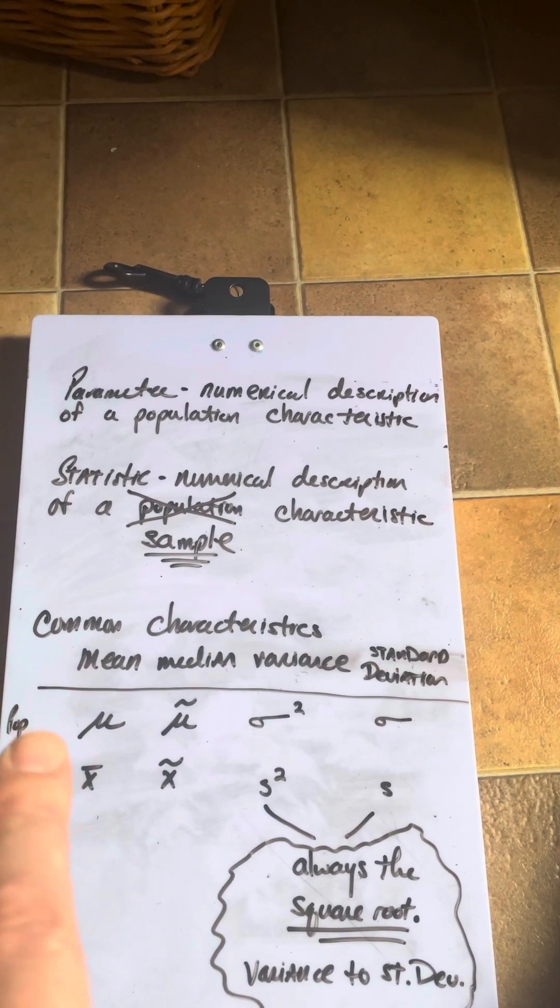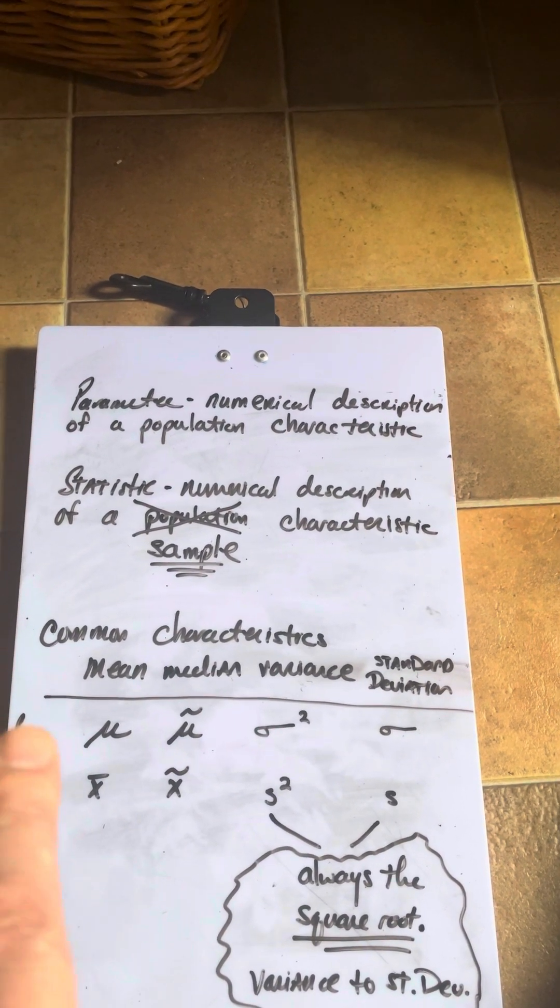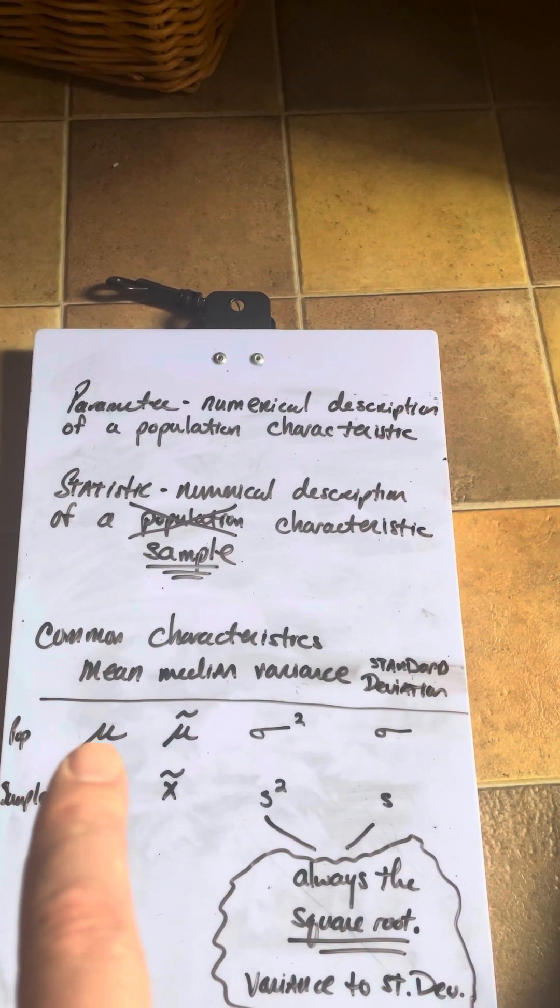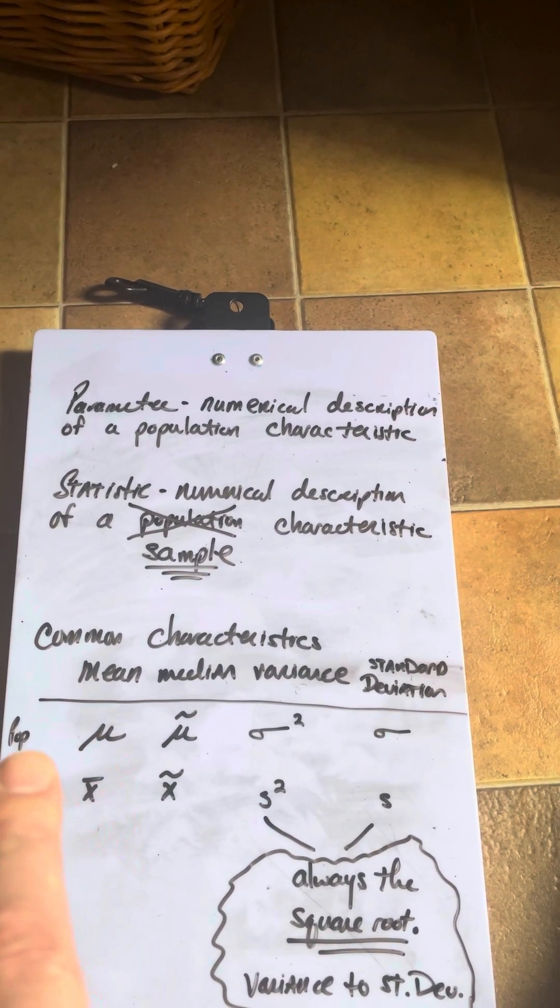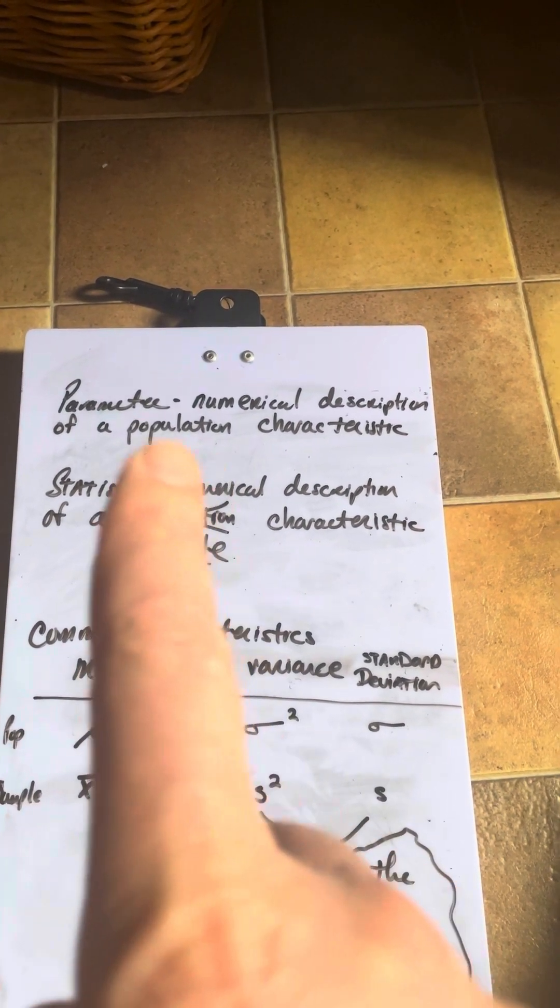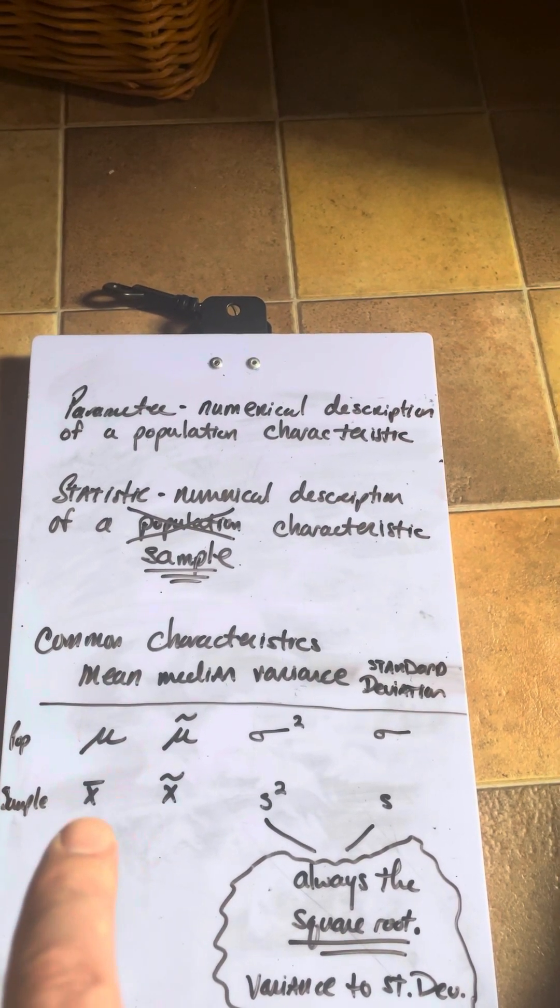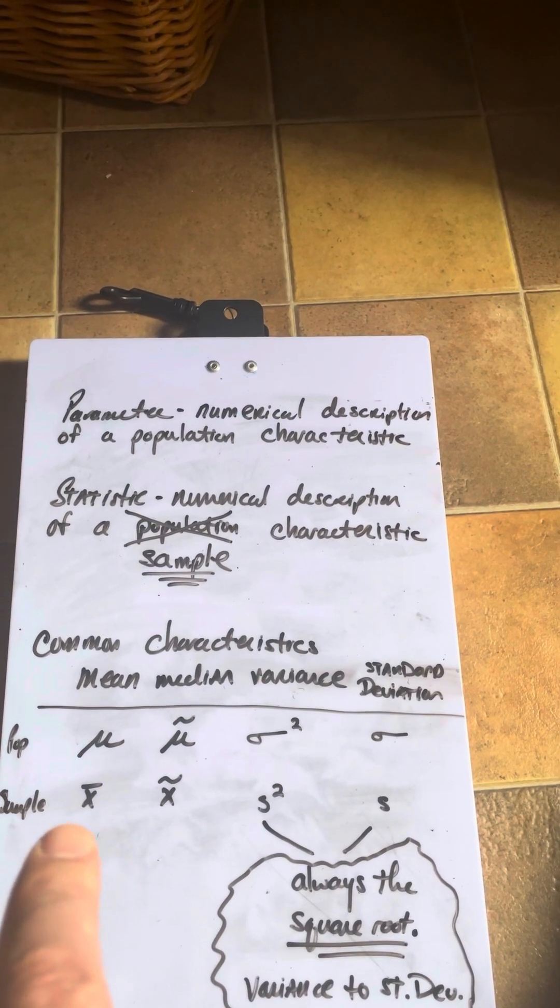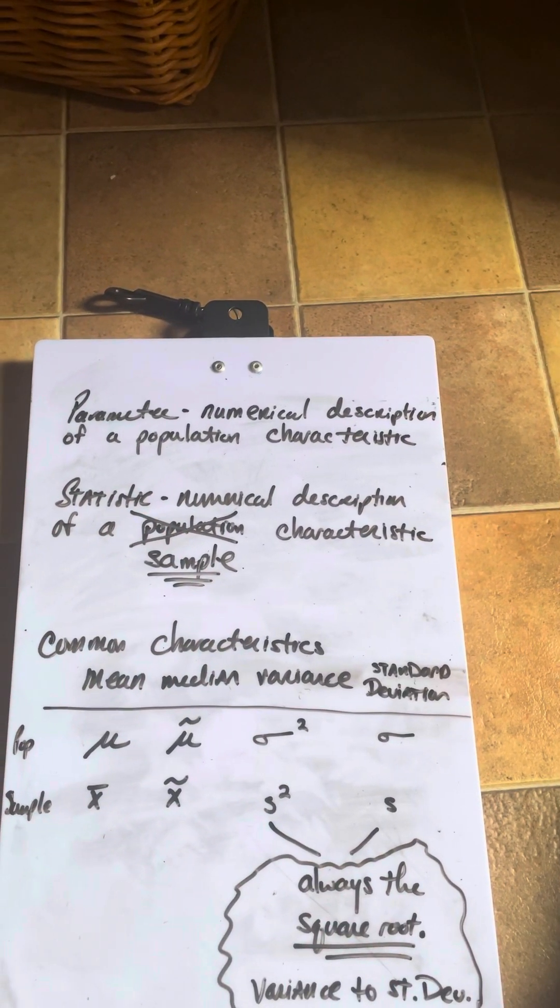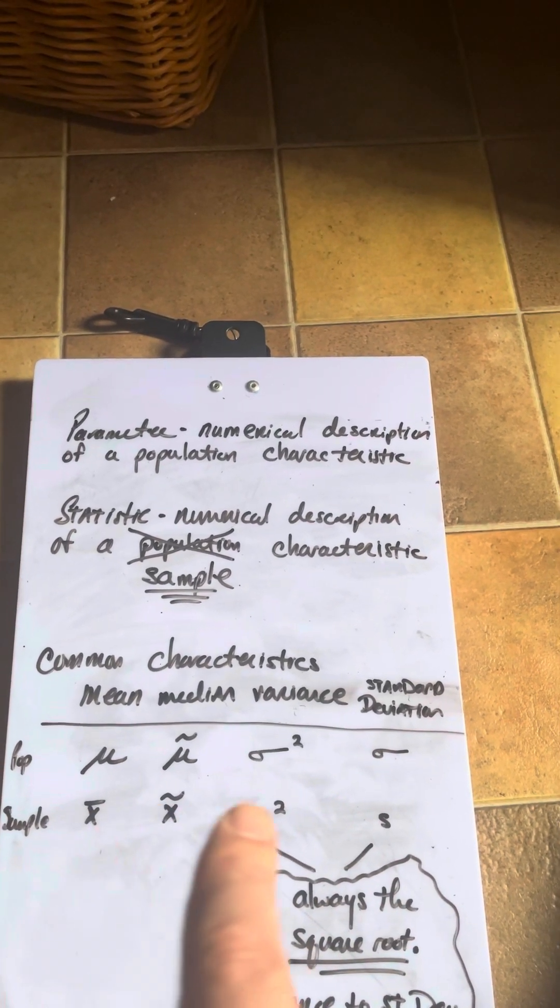Now, I have the word population here and I have the word sample here. The symbol for mean is mu when you're talking about a population. And we call that a population parameter. The symbol for sample mean is x bar, an x with a bar over top. And that is a sample statistic. So these are all parameters. And these are all statistics.